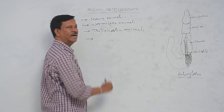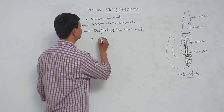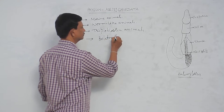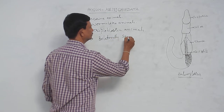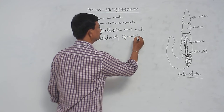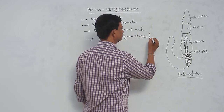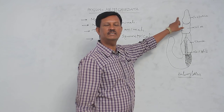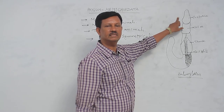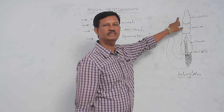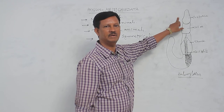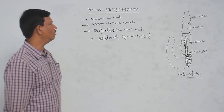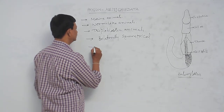These are bilaterally symmetrical animals. In bilateral symmetry, if the body is divided into two equal halves, it shows bilateral symmetry. Here we can divide the body into two equal halves. They are also coelomate animals.